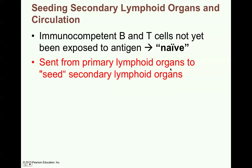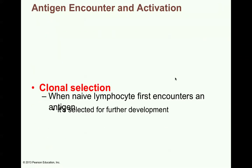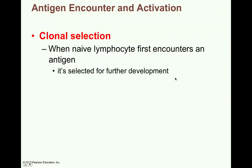Once in secondary lymphoid organs, when they first encounter an antigen, they will then be selected for further development — this is called clonal selection.